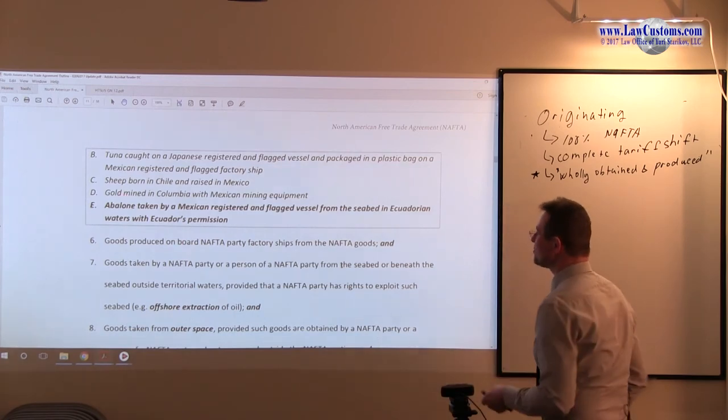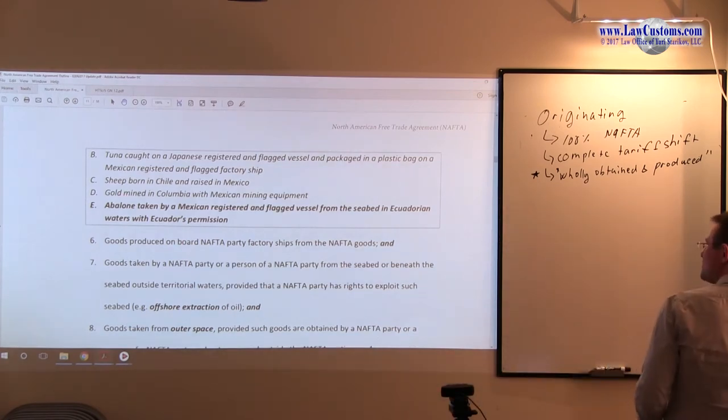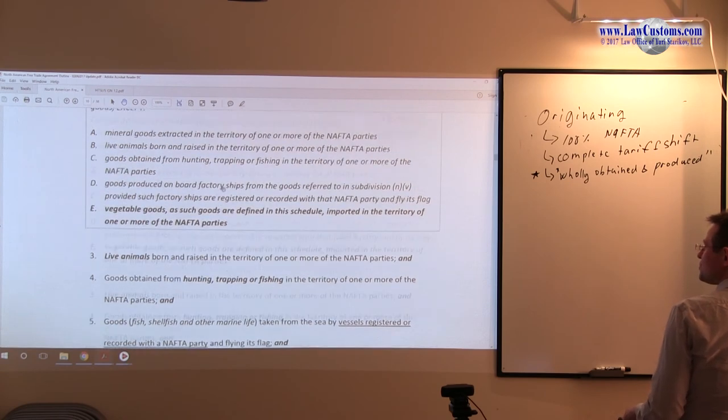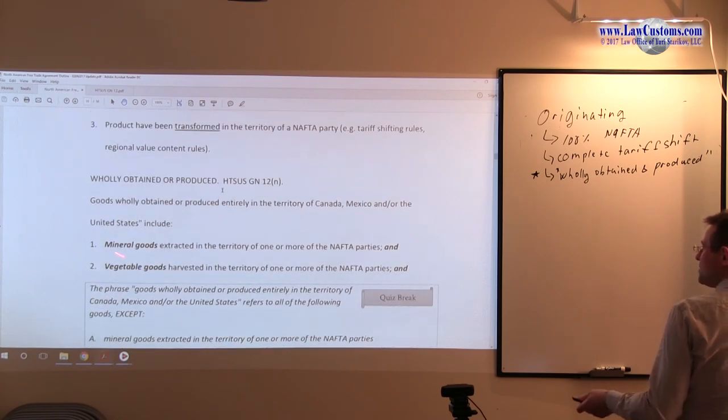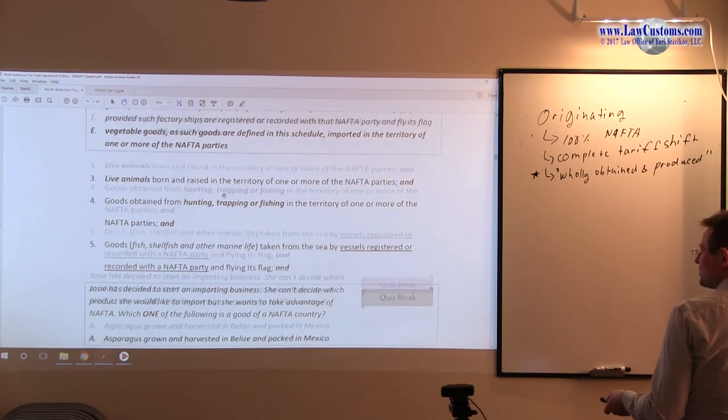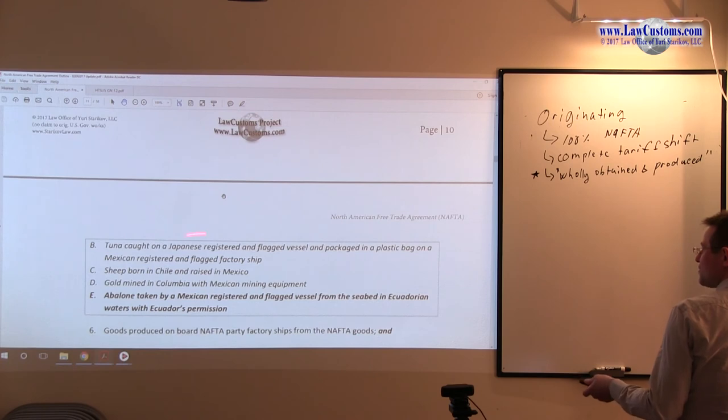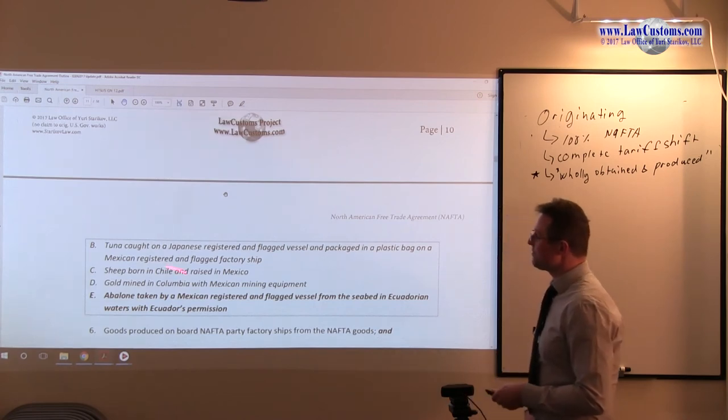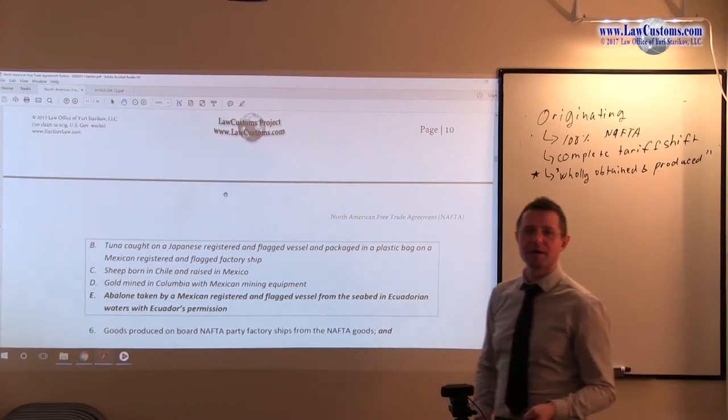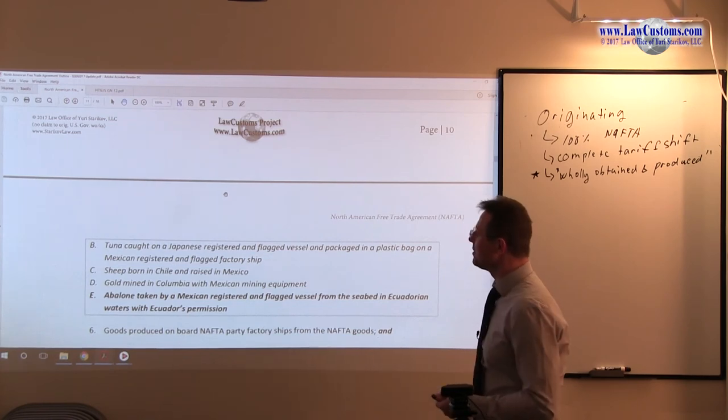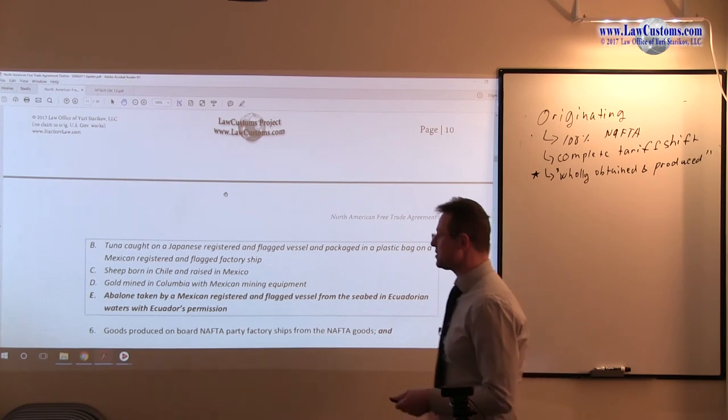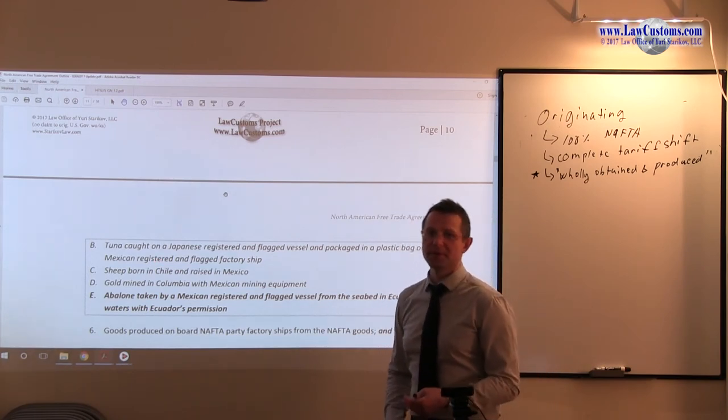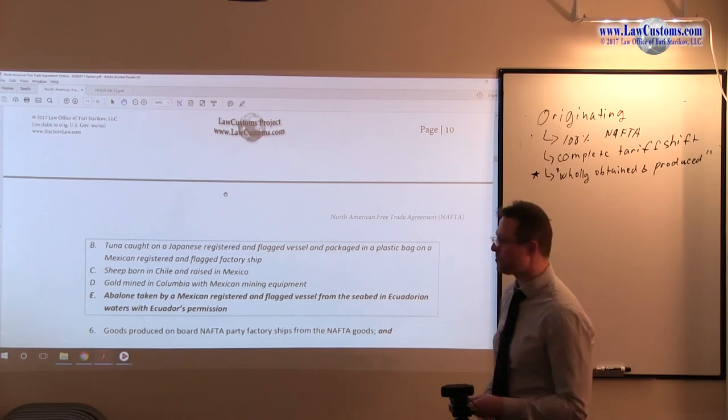Now, gold mineral in Colombia with Mexican mining equipment. So the focus is not on the equipment, but the focus is on the extraction. So gold is a mineral, and it must be extracted in the territory of Canada, Mexico, or the United States. So just the fact that it uses Mexican mining equipment does not change the fact that Colombia is not a member of the NAFTA club. So since it was extracted in the territory of Colombia, it precludes it from the North American Free Trade Agreement preferential duty treatment.